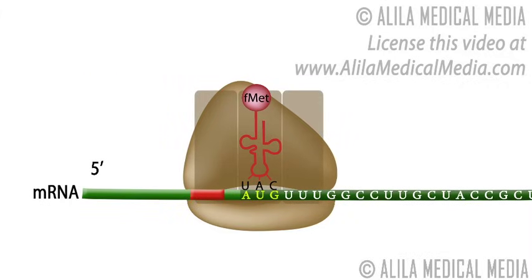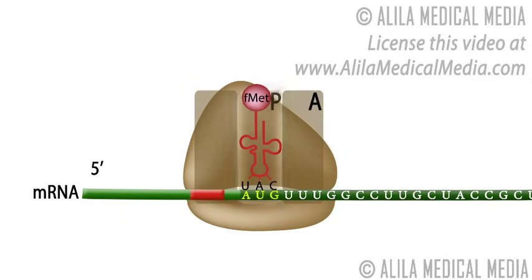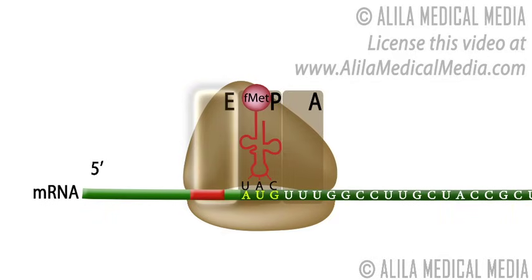The ribosome has three sites. The A site is the entry site for new tRNA charged with an amino acid. The P site is occupied by peptidyl tRNA, the tRNA that carries the growing polypeptide chain. The E site is the exit site for the tRNA after it is done delivering the amino acid. The initiator tRNA is positioned in the P site.